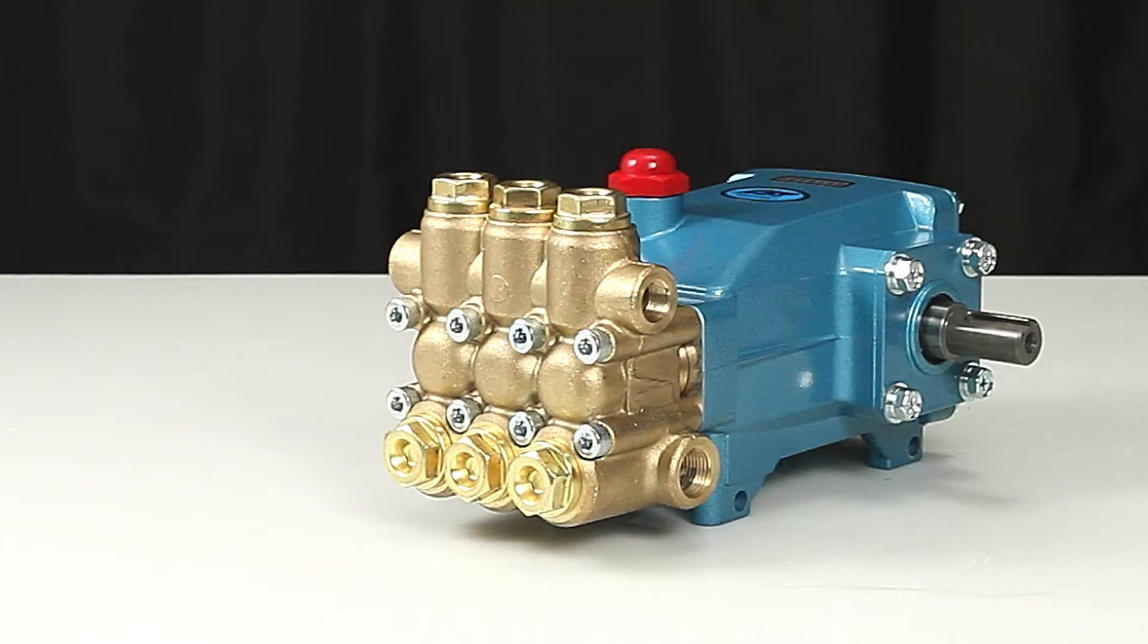The 5CP plunger pump contains two sets of valves. The valves located on the front of the manifold are the inlet valves. The valves located on the top of the manifold are the discharge valves. Both the inlet and discharge valve assemblies are identical. Two valve assemblies are required to service the pump.